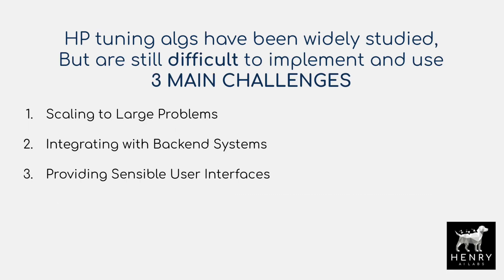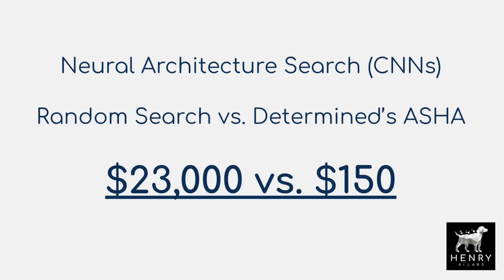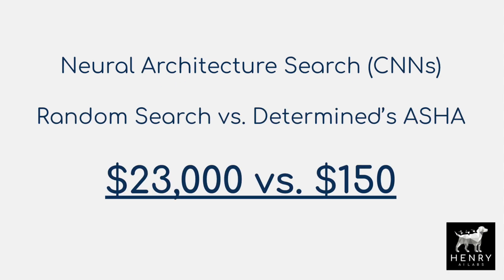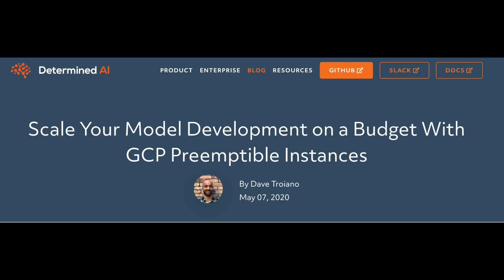Despite the excitement of these AutoML algorithms, there's a huge gap in actual implementation and use. This results in most researchers just not using them altogether, relying on simpler random or grid searches for their experiments. This misses out on the massive performance boost achievable with AutoML. This video presents the key challenges to using cutting-edge AutoML and what Determined AI has implemented to dramatically facilitate using these, leading to huge time and cost savings.